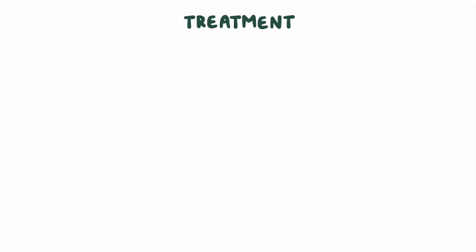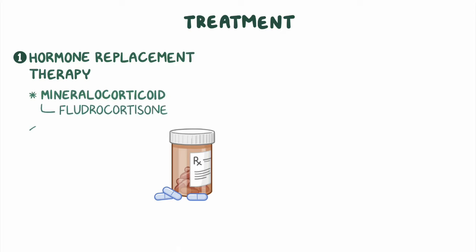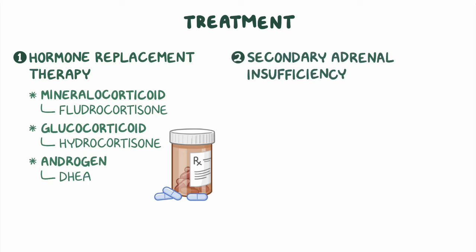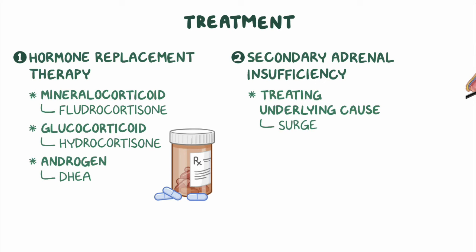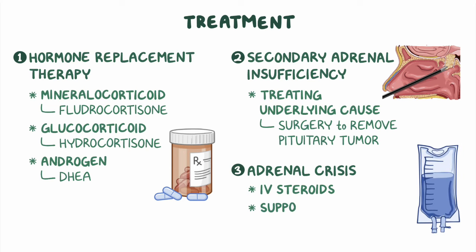Treatment of primary adrenal insufficiency typically involves hormone replacement therapy. The type of hormone replacement depends on which hormones are deficient, and can include a mineralocorticoid like fludrocortisone, a glucocorticoid like hydrocortisone, or an androgen like dehydroepiandrosterone, or DHEA. Secondary adrenal insufficiency involves treating the underlying cause, which may include surgery to remove a pituitary tumor. Treatment of adrenal crisis involves intravenous steroids and supportive treatment.